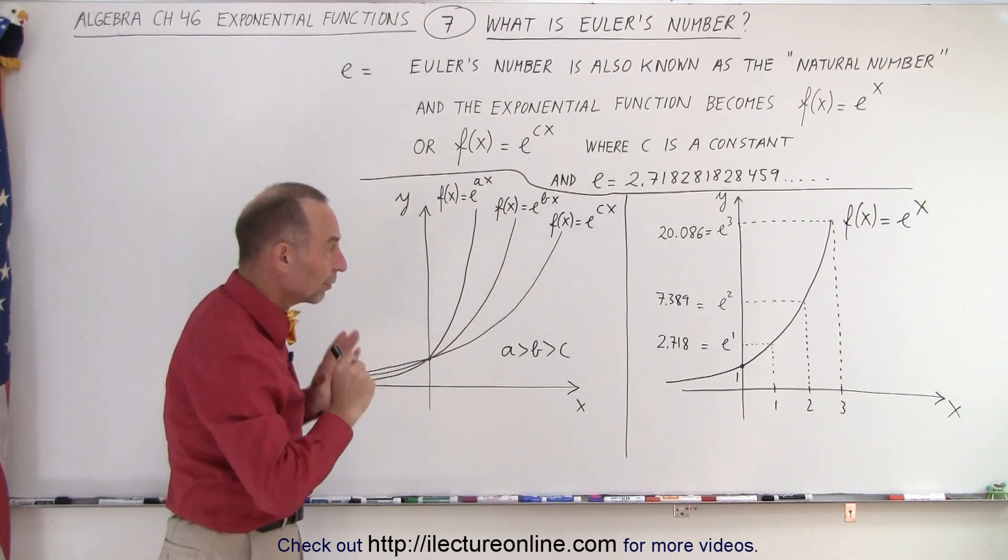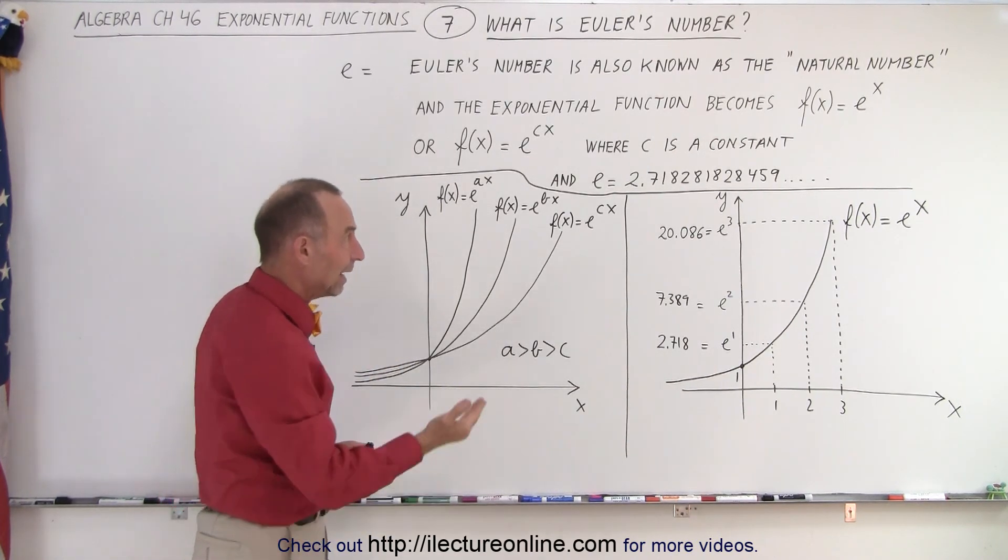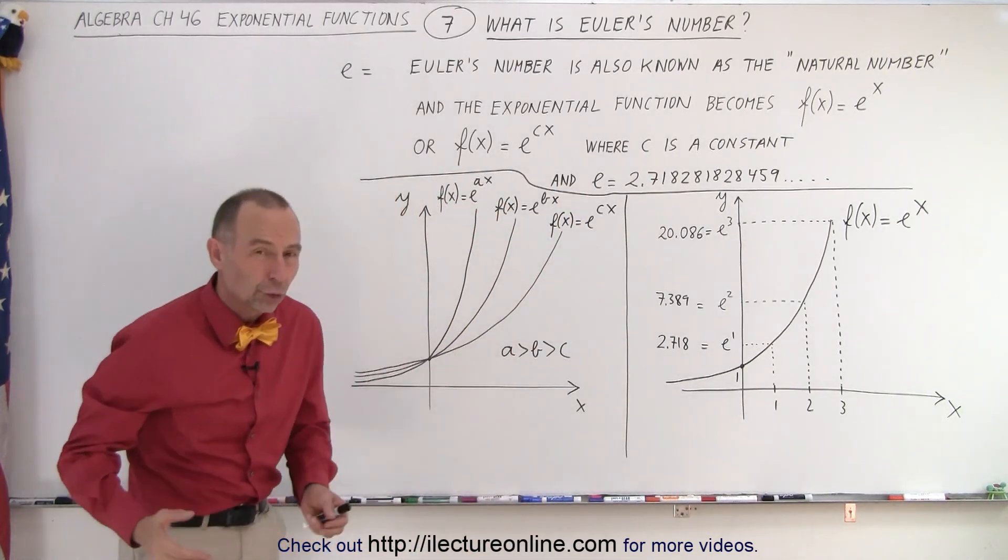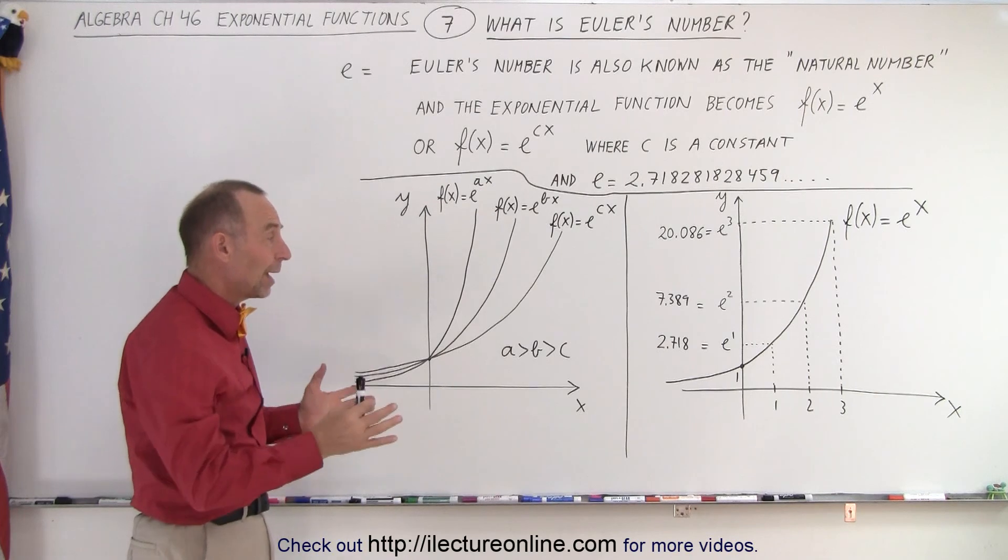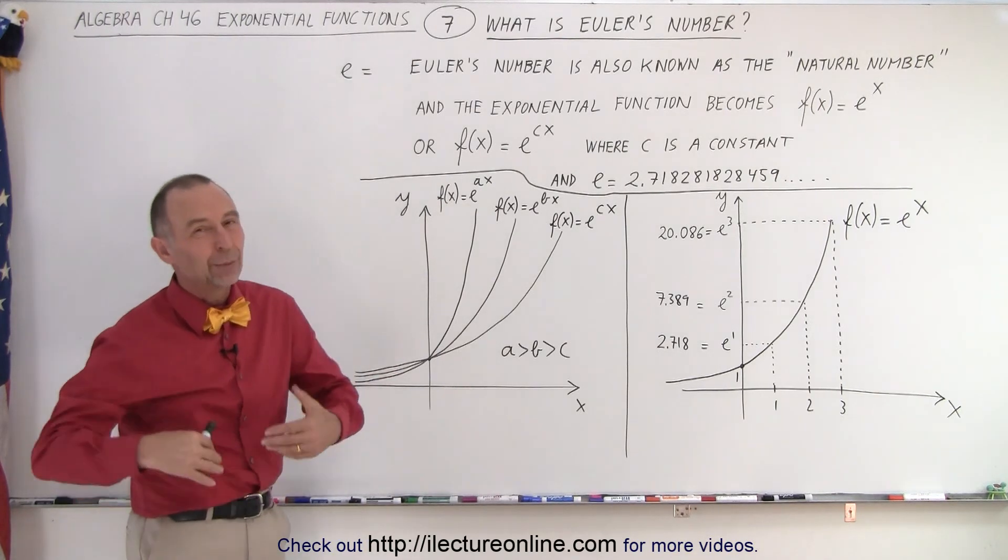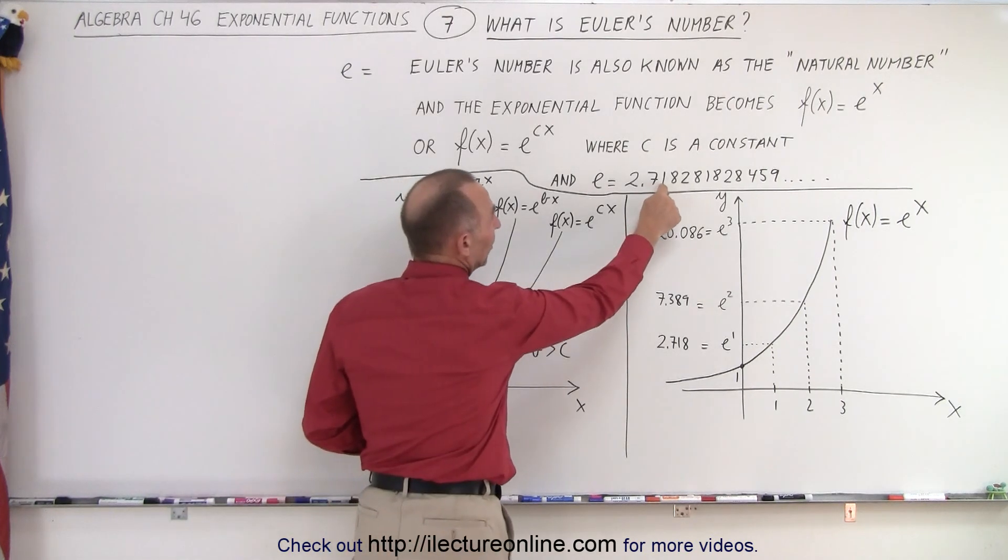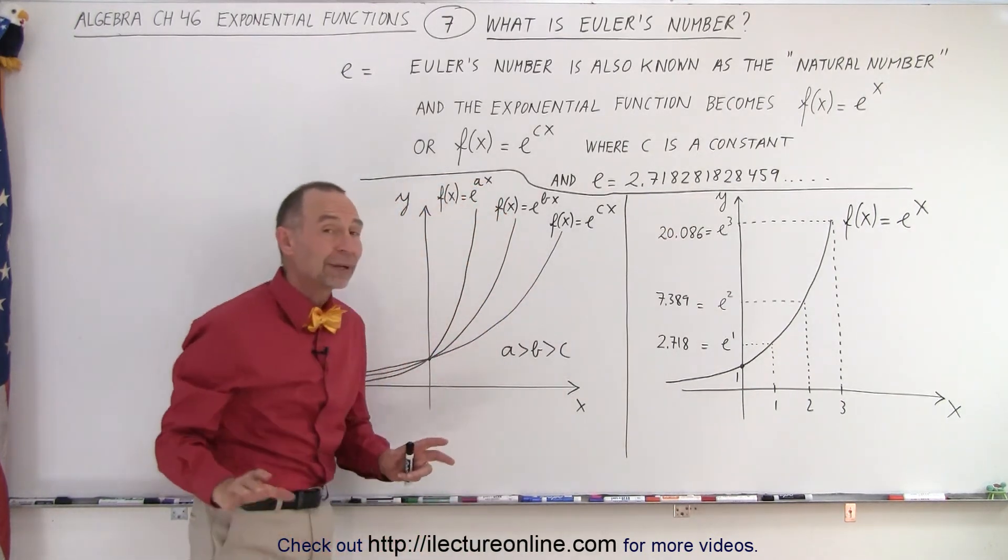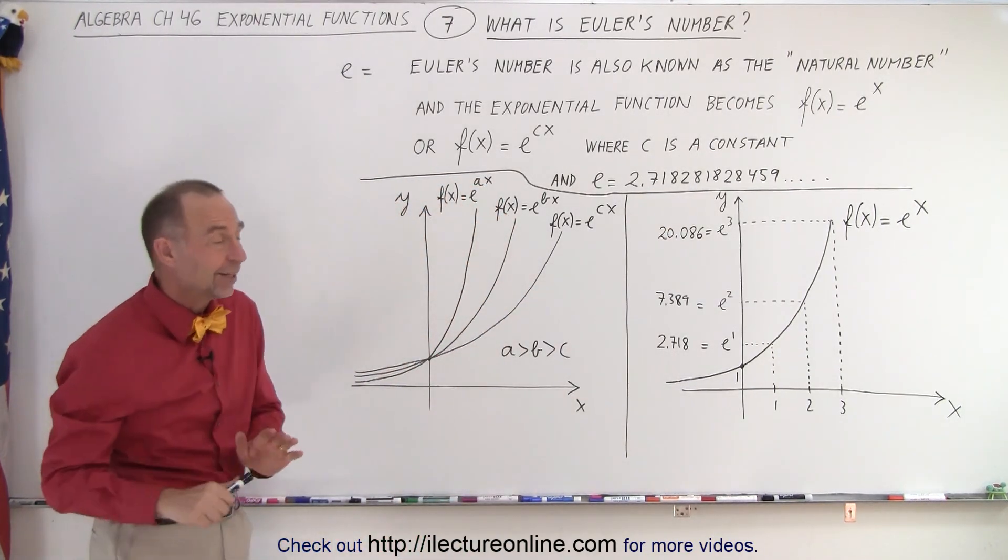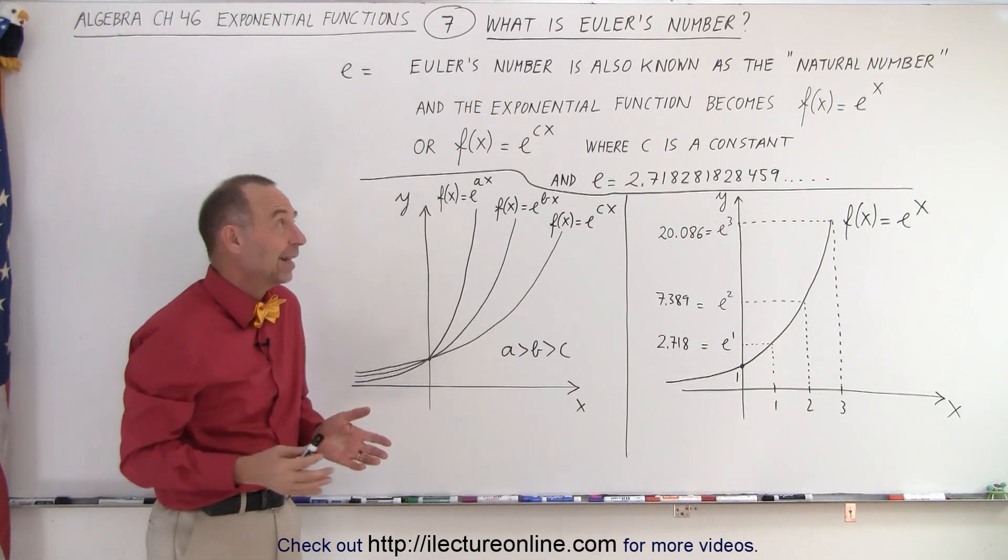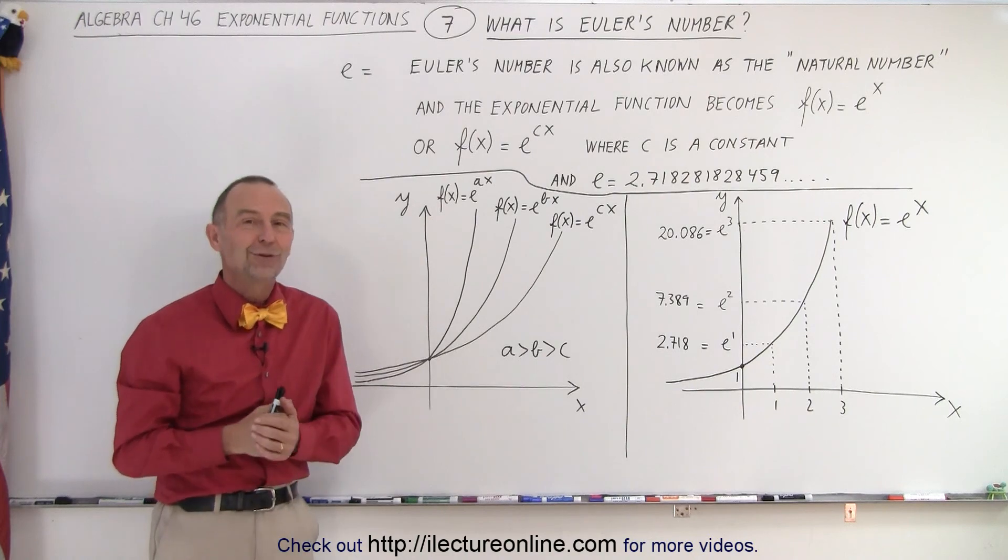So, hopefully, this gives you a good feel. It turns out, again, that everything in nature grows according to that natural number called Euler's number. And that's why this is such an important function. And we'll get into where that function came from, and we will show you mathematically where this number came from as well. You can actually calculate it if you like, and we'll show you how to do that in some later videos. And that is the answer to what is Euler's number.